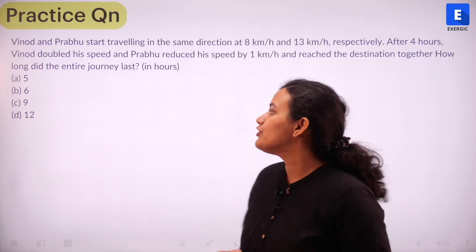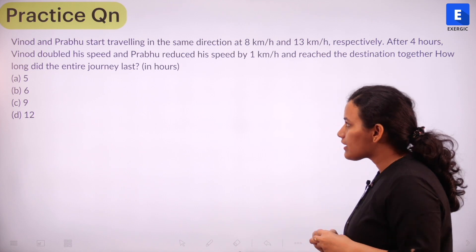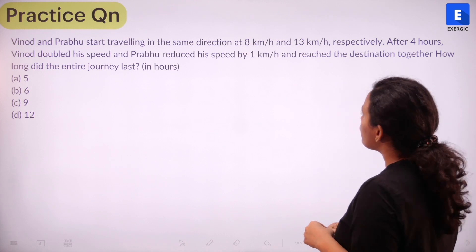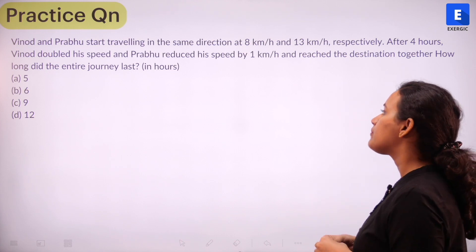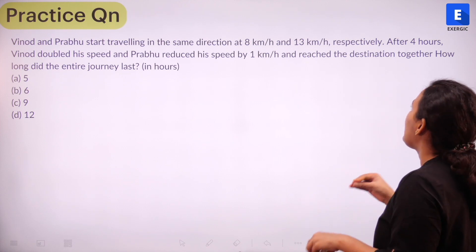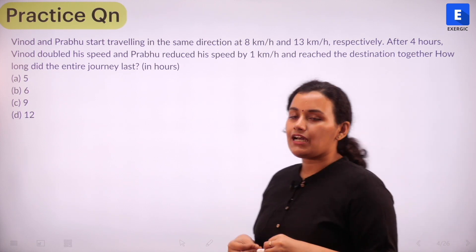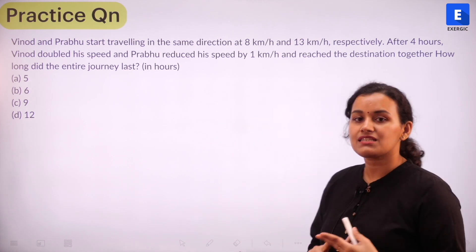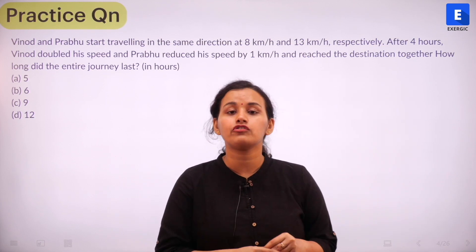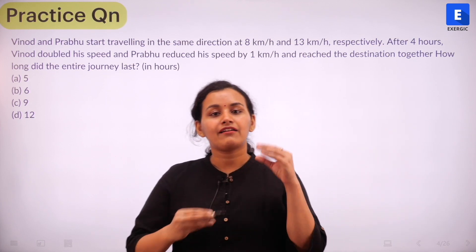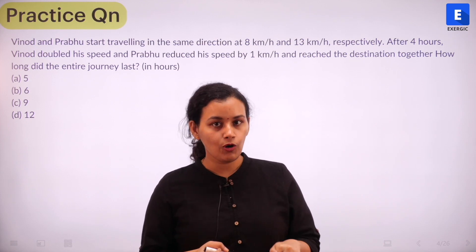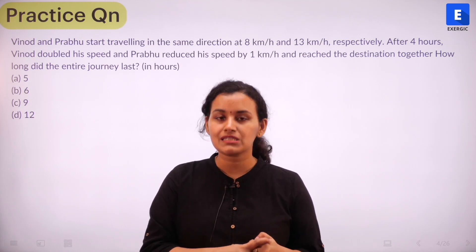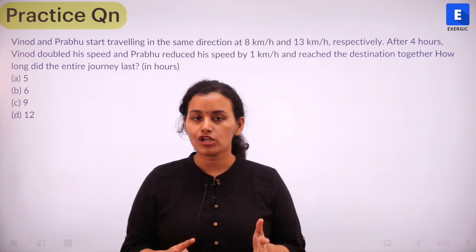Here is the practice question for you: Vinod and Prabhu start traveling in the same direction at 8 kilometers per hour and 13 kilometers per hour respectively. After four hours, Vinod doubles his speed and Prabhu reduces his speed by one kilometer per hour, and they reach the destination together. How long did the entire journey last? The options are 5, 6, 9, and 12 hours. Give it a good try and write your answers in the comment section below — the correct answer and solution will be provided within 24 hours.